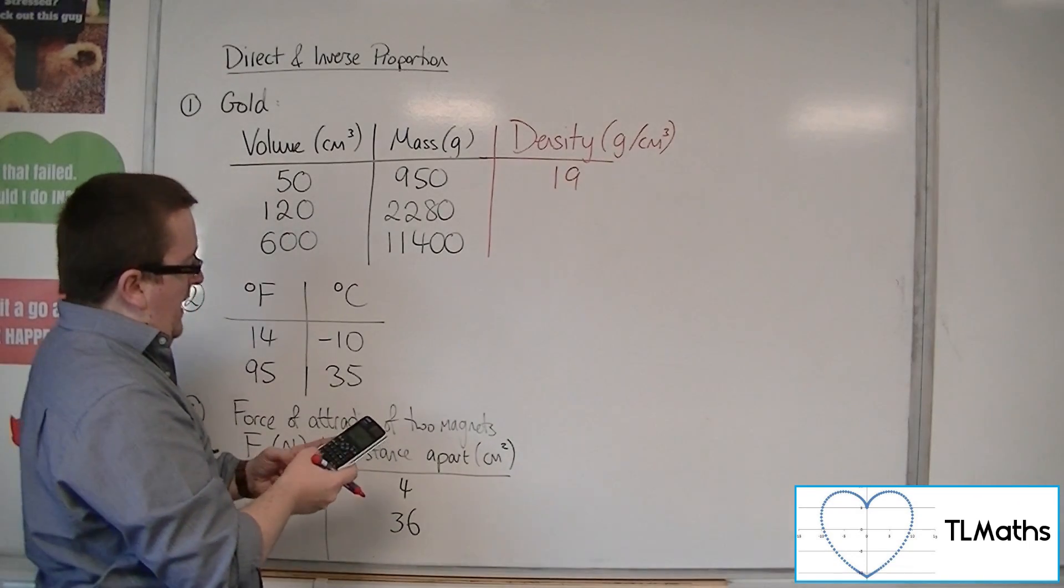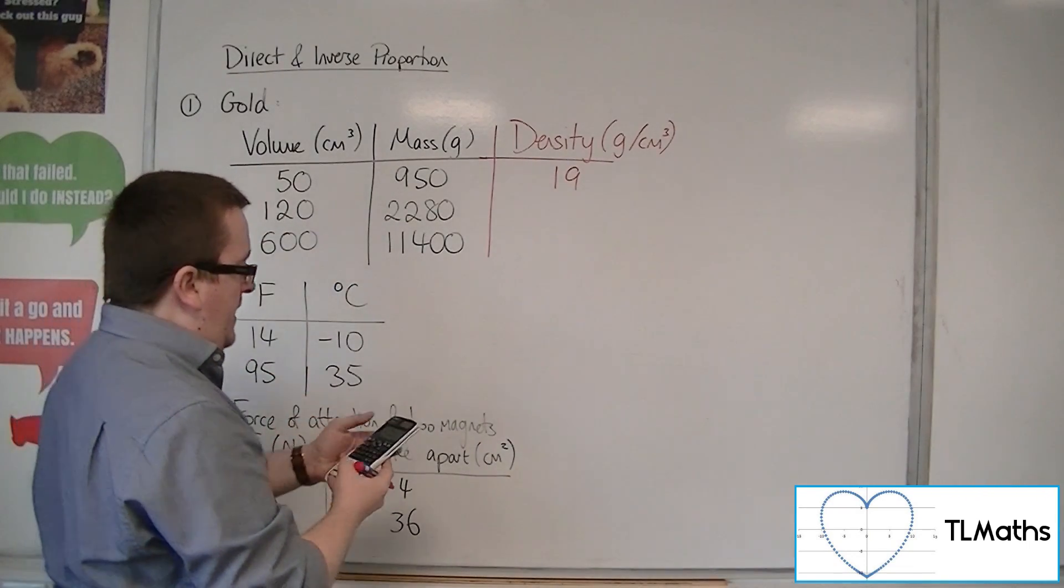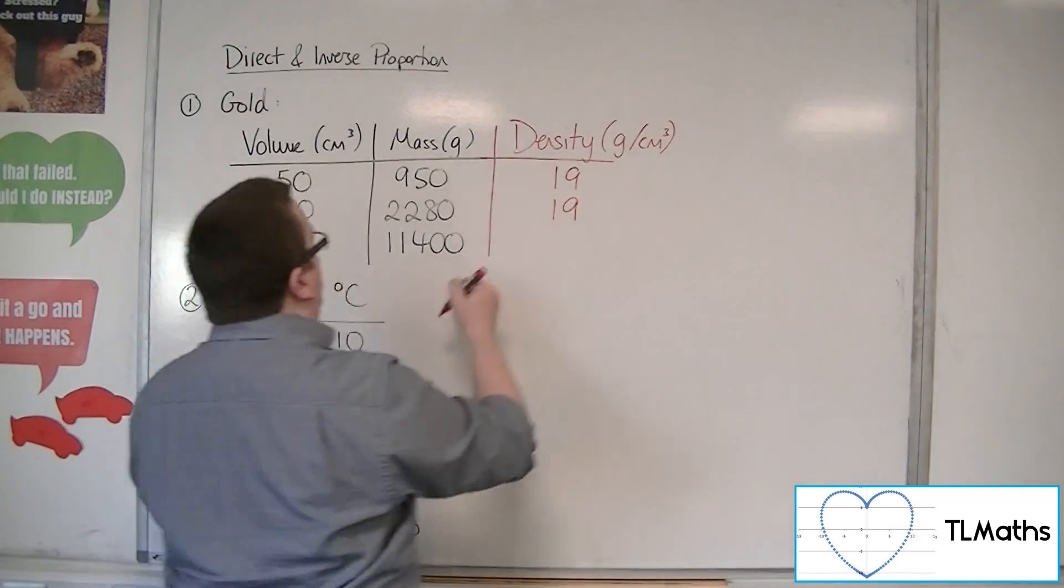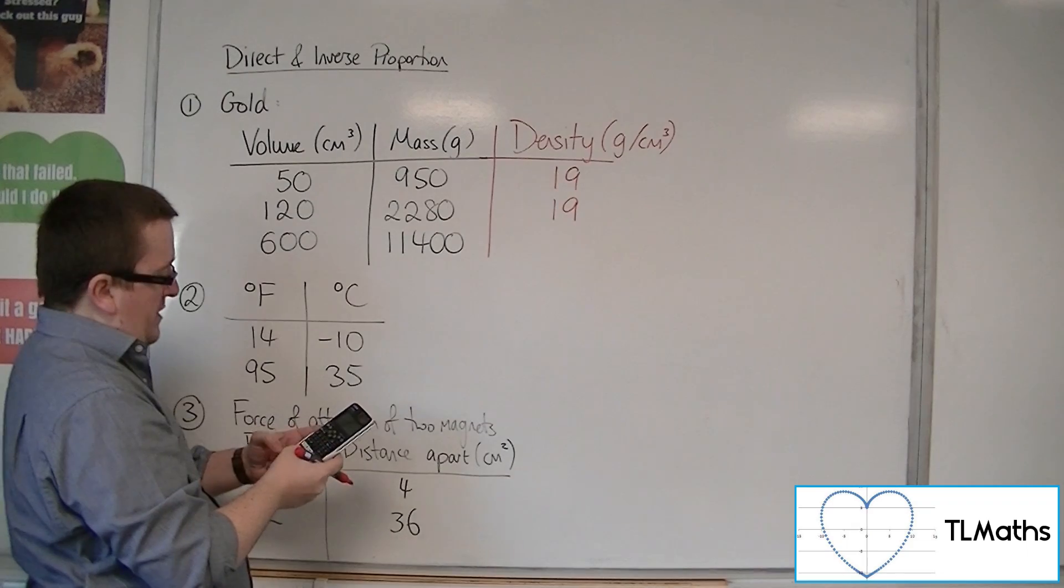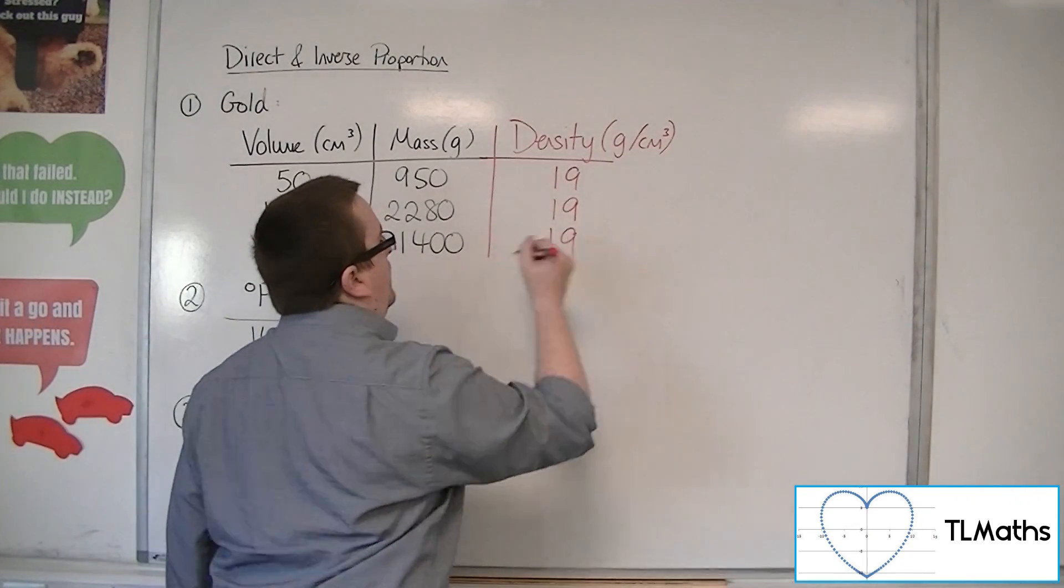So if we did 950 divided by 50, I know that that's 19. 2,280 divided by 120, well, that's 19 as well. And 11,400 divided by 600, that's 19 also.